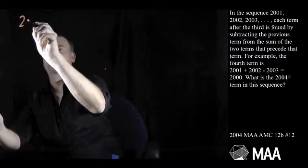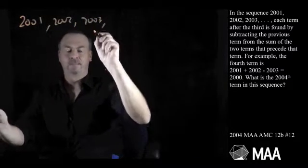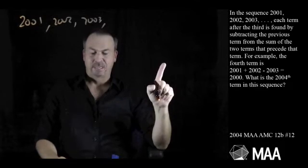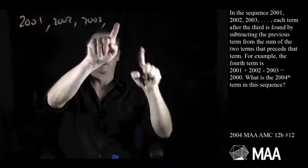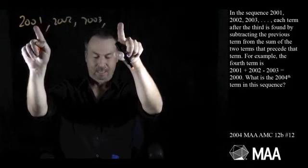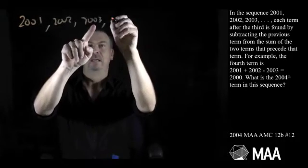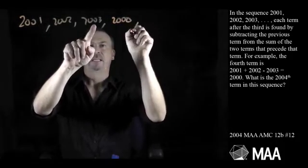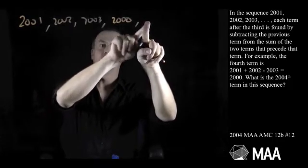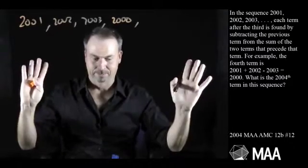We've got a sequence 2001, 2002, 2003. Each term after the third is found by subtracting the previous term. So I want to find this one. Subtract the previous term from the sum of the two terms that precede that. And they're saying that 2001 plus 2002 take away 2003 is 2000. So what I do is I take two terms, add them, subtract the third one, get the answer. That's how the sequence is generated. Got it.